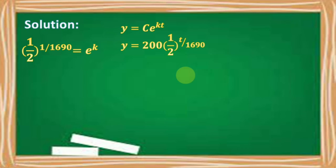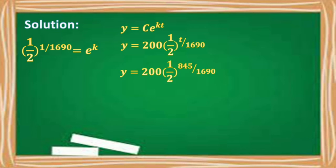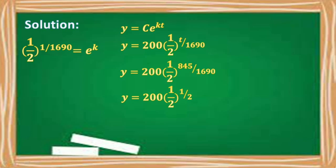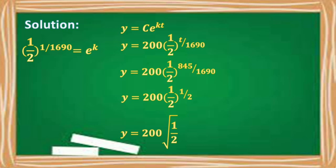Replacing t with 845, we have y = 200 · (1/2)^(845/1690). We can reduce the fraction in the exponent to its lowest term, so it becomes y = 200 · (1/2)^(1/2). The rational exponent (1/2)^(1/2) can be transformed into radical form, giving y = 200 · √(1/2).